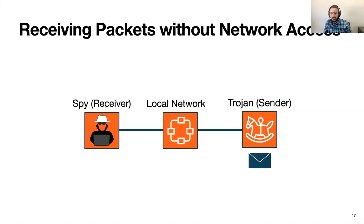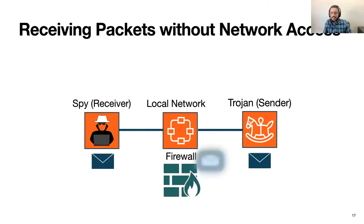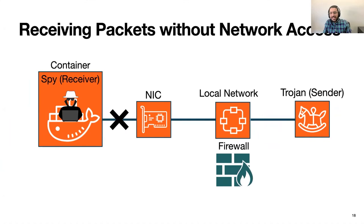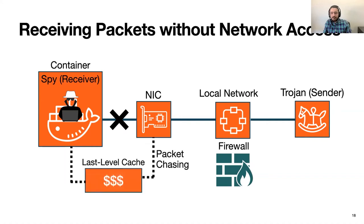Now we want to exploit this to build a covert communication channel. In our setup, spy and trojan are two processes running on two different nodes across the local network — the trojan wants to send covert messages to the spy. Normally you can stop communication between them using a firewall. There are many clever network-level covert channels that can bypass a firewall if there is a network connection. But even if you revoke the spy process's network access, Packet Chasing can still build a strong covert channel between parties who don't even have network access — just by monitoring activity in the last-level cache.